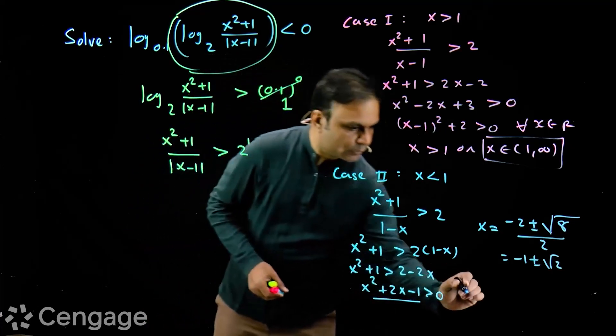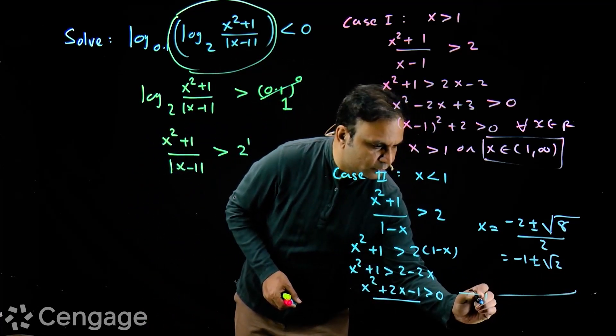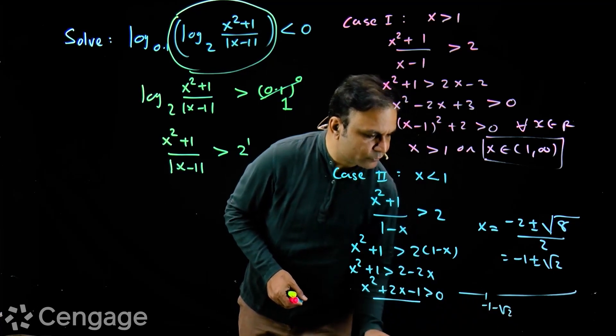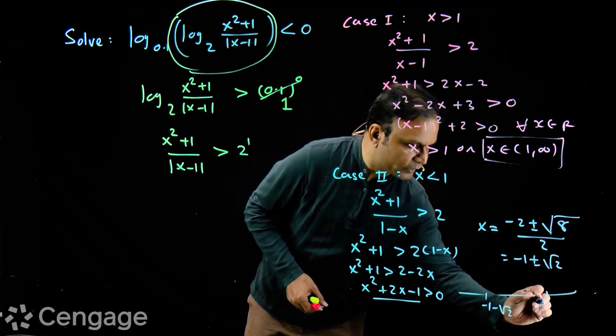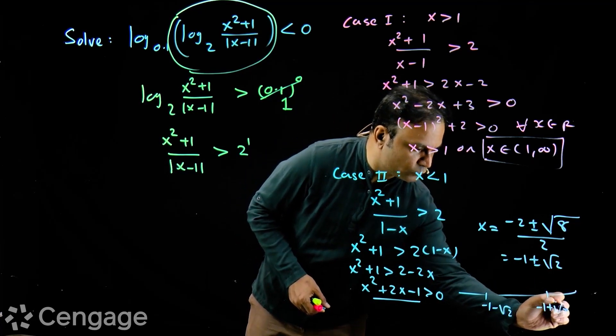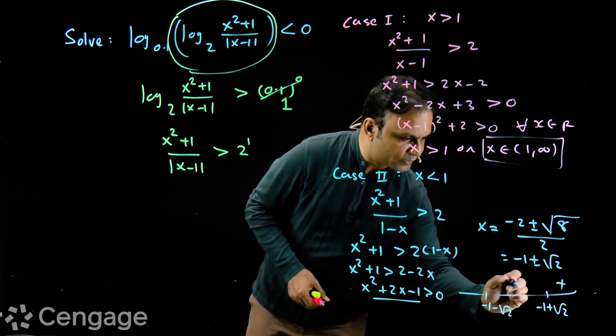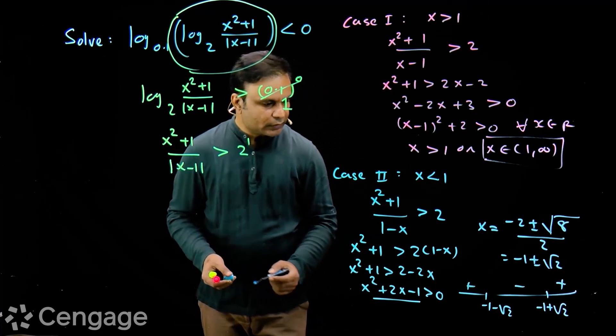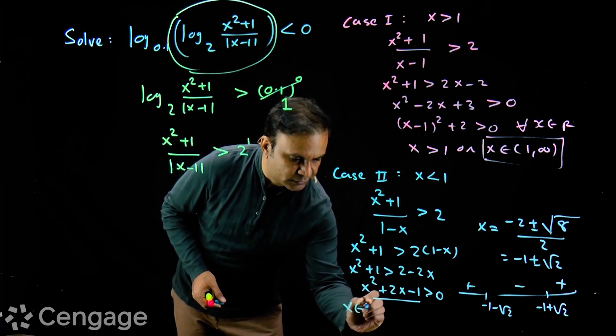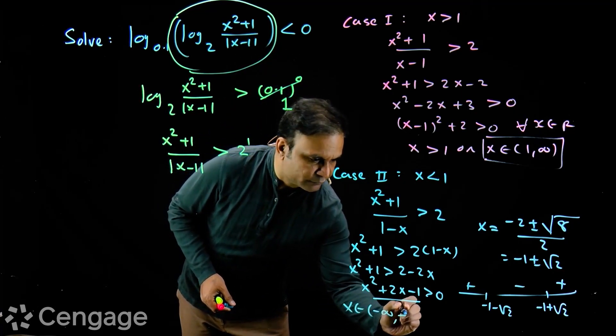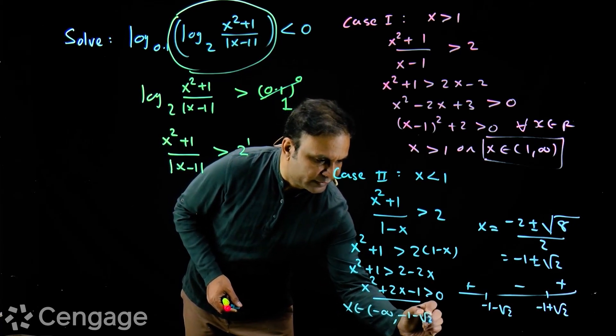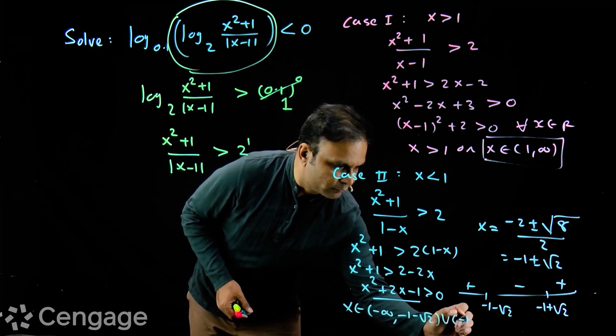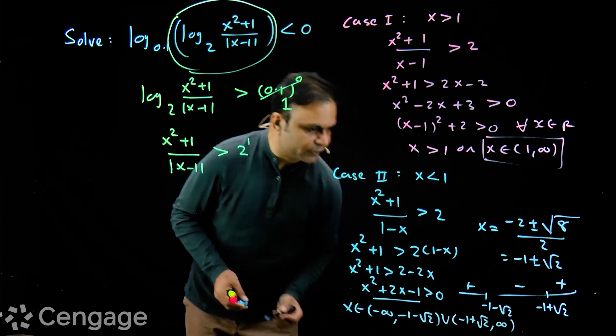On number line, I put two values minus 1 minus root 2 and minus 1 plus root 2. The sign will be plus minus plus and we want this expression to be positive. So my x is from minus infinity to minus 1 minus root 2 union minus 1 plus root 2 to infinity.